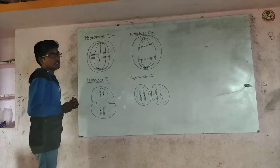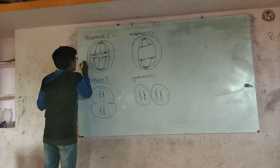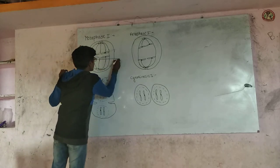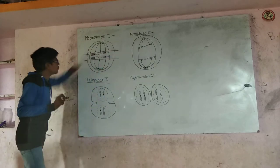In case of Metaphase I, homologous chromosomes are arranged in the equatorial plate of the cell. This is a very important point.